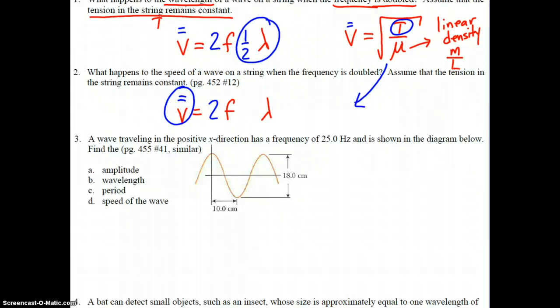Moving on to number three. A wave traveling in the positive x direction has a frequency of 25 hertz and is shown in the diagram below. Find the amplitude, wavelength, period, and speed of the wave.